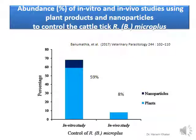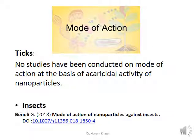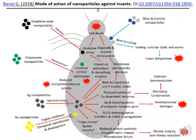The bad news is there is no application of nanopesticides in the field. No studies have been conducted on the mode of action underlying the acaricidal activity of nanoparticles. There is only one study made by Benelli 2018 about the mode of action of nanoparticles against insects. Insects eventually die after application of nanopesticides because of dehydration, developmental damages, or chronic toxicity with fitness reduction.